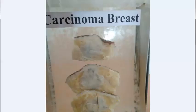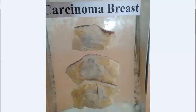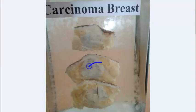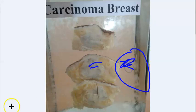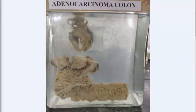Carcinoma breast — the very specific things to write here: hard cartilage-like mass, the tumor is irregular. When you cut it, it will make a grating sound because it is hard and cartilage-like. You will see chalky streaks. In microscopy, you will see comedonecrosis and tumor cells in nests.